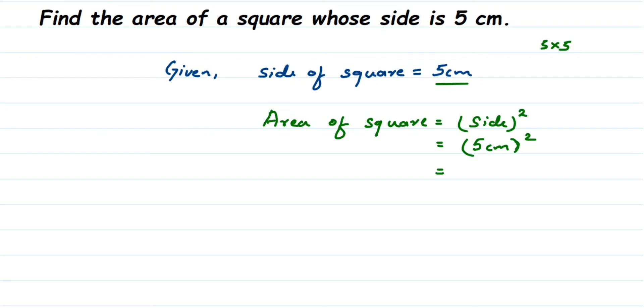So 5 square is 25. We will get 25 and cm into cm will be cm square. So this will be 25 cm square.